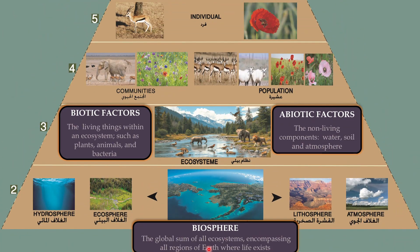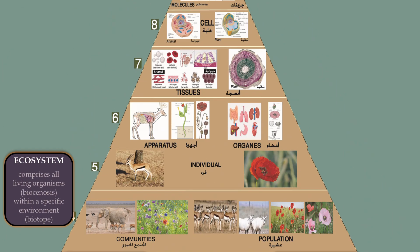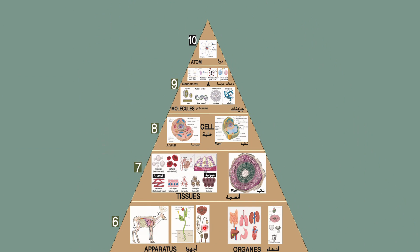The fundamental unit of nature is an ecosystem, which comprises all living organisms or biocenosis within a specific environment or biotope. Communities are formed by various populations that interact with one another and share a common environment — for example, communities in animals and in plants. Individuals with similar physical characteristics constitute a species. The organism of an individual is organized into systems or apparatus, in animals and in plants.